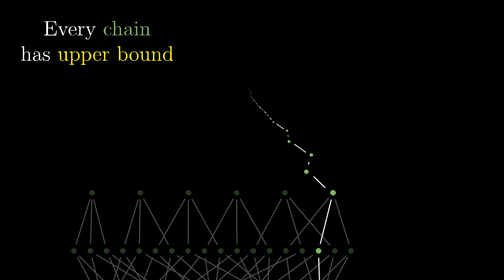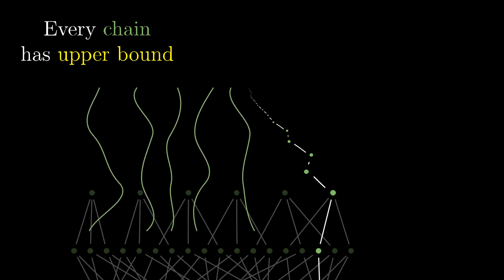We discussed chains in the chapter about real numbers — they are subsets of the partially ordered set where every two elements are comparable. We can imagine them as vertical paths in the partially ordered set. An upper bound is an element that can hold the entire chain below itself: it can be the maximum, the supremum of the chain, or even something bigger.